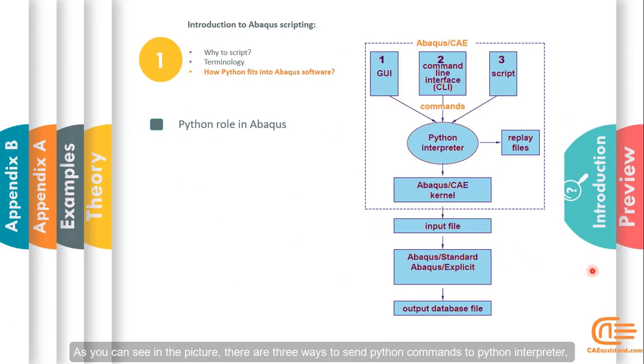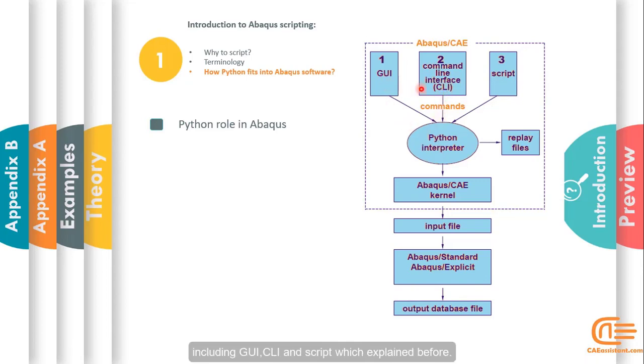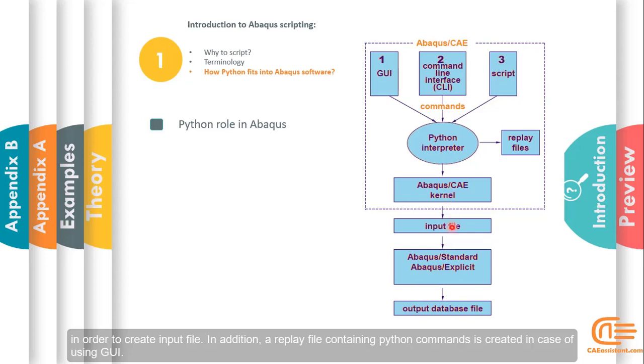As you can see in the picture, there are three ways to send Python commands to Python interpreter, including GUI, CLI, and a script which explained before. After interpreting commands by Python interpreter, they are sent to the kernel in order to create input file. In addition, a replay file containing Python commands is created in case of using GUI.